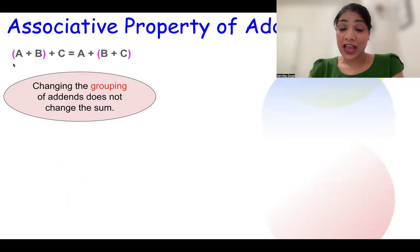Changing the grouping of addends does not change the sum. So say if we have three numbers A, B and C and we are adding them together, if we make a group of A and B and add them first and then add C, it will give us the same sum as if we would have added B and C together first and then added A to it.